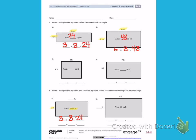To write a related division problem, I'm going to write 24 divided by 3, which is the side that I knew, equals 8. 8 feet is my missing side.